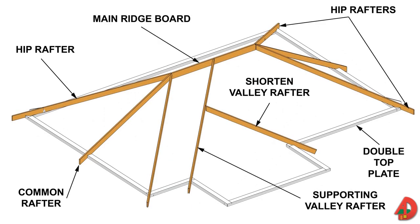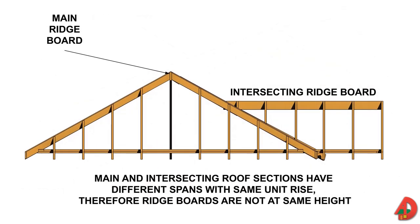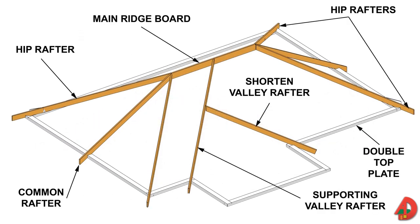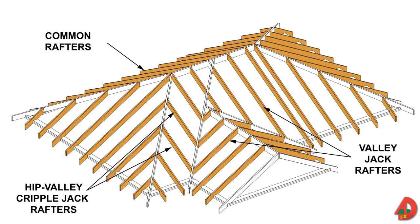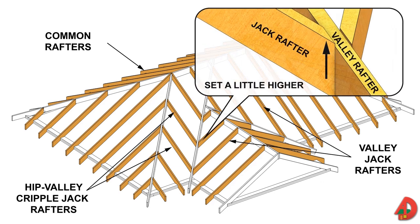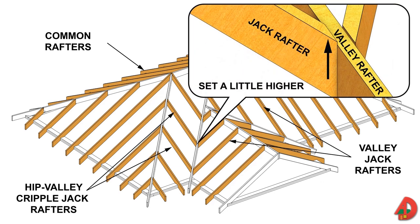The framing procedure for an intersecting roof with unequal spans differs somewhat from the equal span procedure. In a roof with unequal spans, the main ridge board is higher than the ridge board of the smaller roof. Procedure: install the main ridge board supported by two corner hip rafters and one common rafter at each end; install supporting and shortened valley rafters; install the intersecting ridge board with a 45-degree cut at the end that fastens to the valley rafters; install a pair of common rafters at the end of the intersecting ridge board; install remaining common rafters on main and intersecting roofs; install hip jack rafters, valley jack rafters, and hip valley cripple jack rafters. When nailing valley jack rafters to the valley rafter, hold two jack rafters slightly higher than the top surface of the valley rafter, allowing roof sheathing to touch the center of the valley rafter.